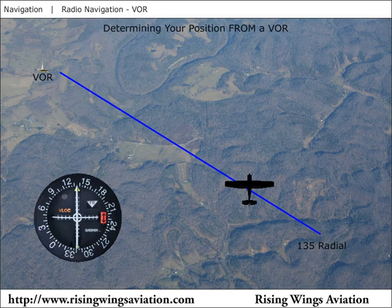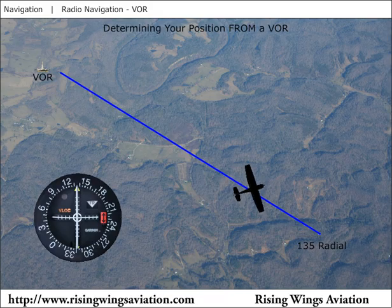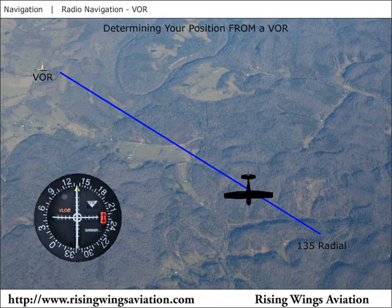One thing that can be very confusing when learning VOR navigation is that the radial you are on has nothing to do with your heading. You could be on a 135 radial and headed north, south, or any direction.